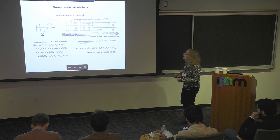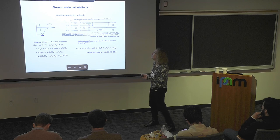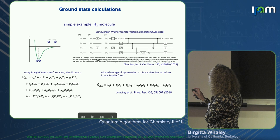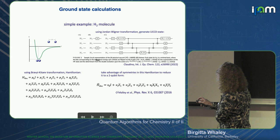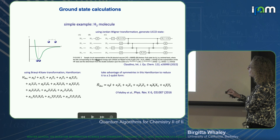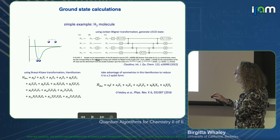I'm going to give some examples of ground state calculations. We already looked at one from IBM with the hardware-efficient ansatz. But this is just the simplest possible system, H2, using a Jordan-Wigner state — that was the circuit from Claudino's paper. The actual experiment was done at Berkeley in my colleague Efant Sadifi's lab.